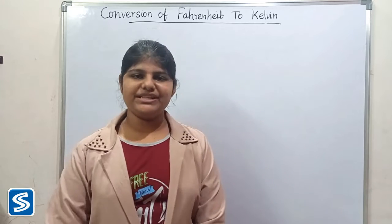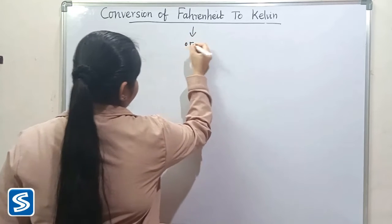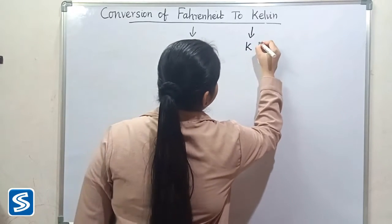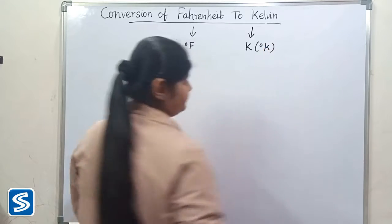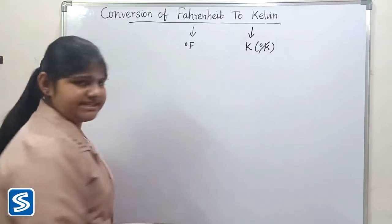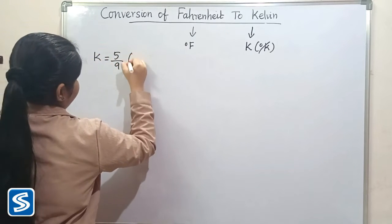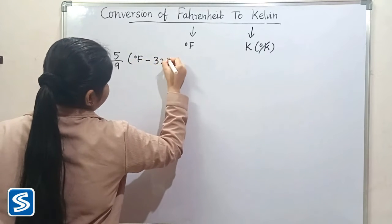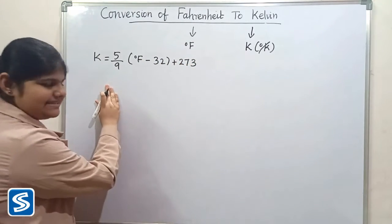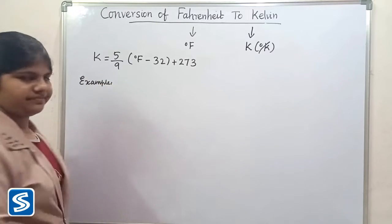Fahrenheit and Kelvin are units of measuring temperature. The short form of Fahrenheit is degree F. The short form of Kelvin is K. In the Kelvin scale, the degree symbol is not used. The formula for converting Fahrenheit into Kelvin is: Kelvin = (5/9) × (degree Fahrenheit − 32) + 273.